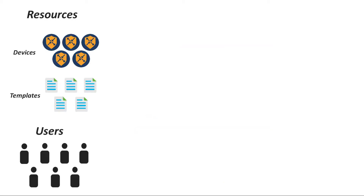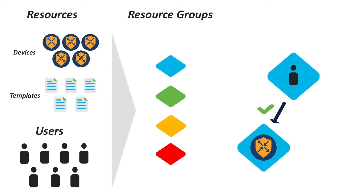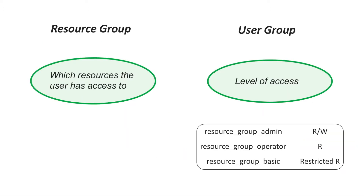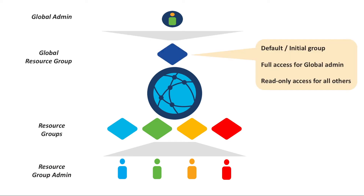To begin with, let's clarify some terminology. Resources include edge devices and templates. Resources and users are classified into resource groups. Users in a resource group have access to resources in the same resource group only. Resource group defines which resources the user has access to, while user group defines the level of access. The global admin is also part of a resource group.